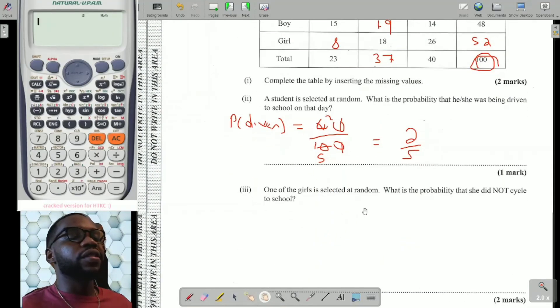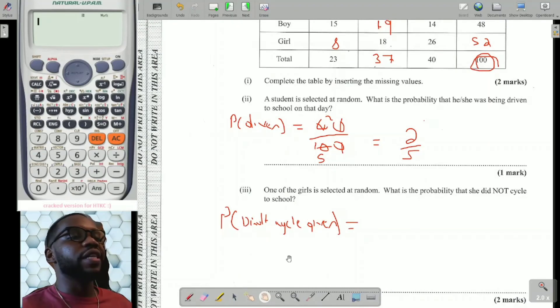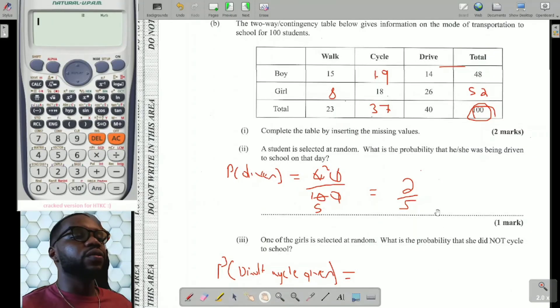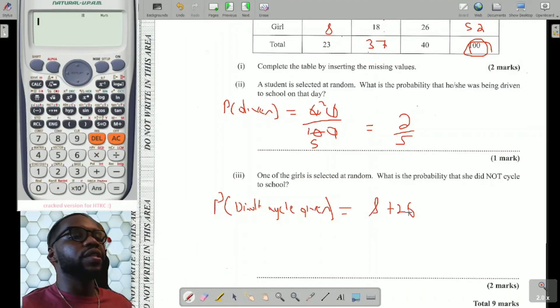It says one of the girls is selected at random. What does that mean? It means that you're focusing on girls only. So you're going to ignore the boys totally. What's the probability that she did not cycle to school? So probability didn't cycle given girl, because they tell you it's a girl. A girl was chosen. So it means that the boys don't factor in. Now, if you didn't cycle, you either walk or you drive. And since we're focusing on the girls alone, it's 52 girls. So we know it's whatever we have over 52.